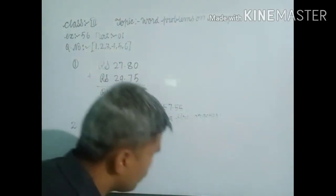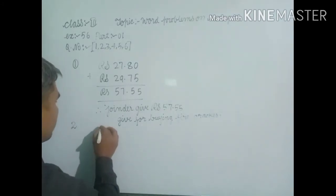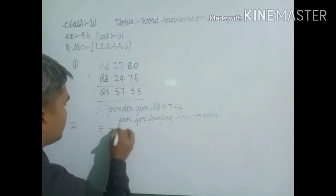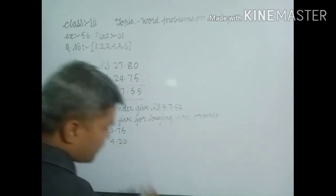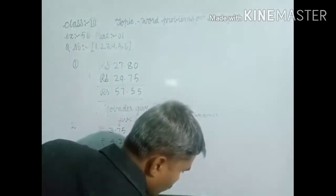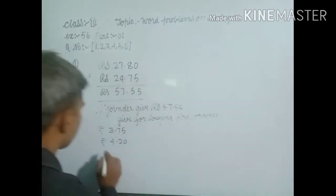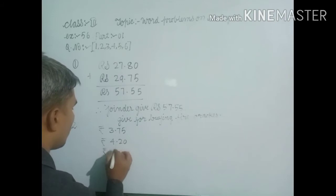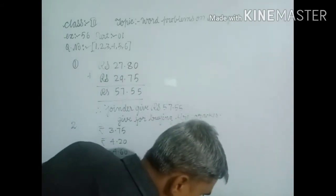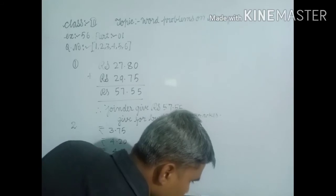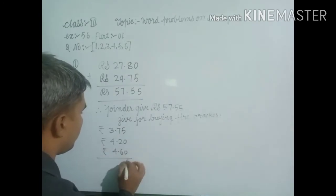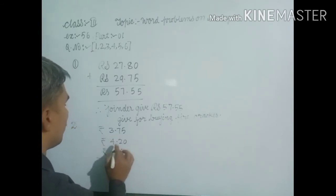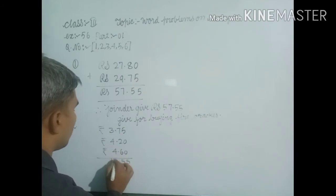So, you write here, Rs. 3.75, and 4.20, and 4.60. Now, items here, 5, 6, 7, 15, 12 paise.